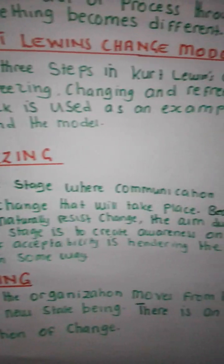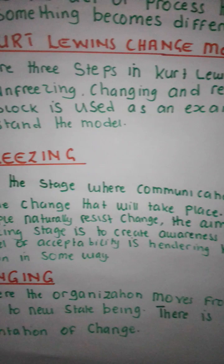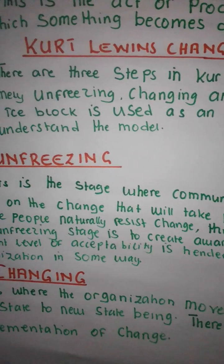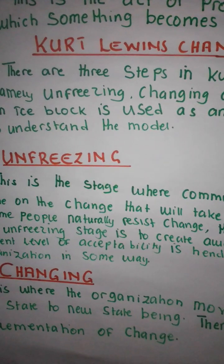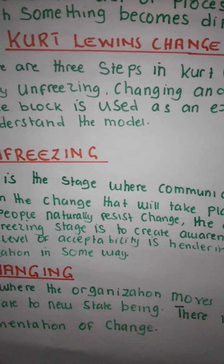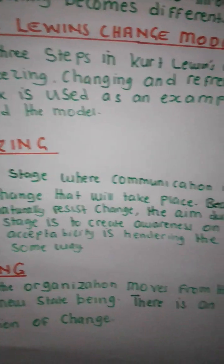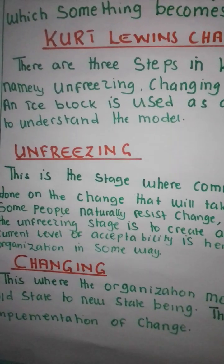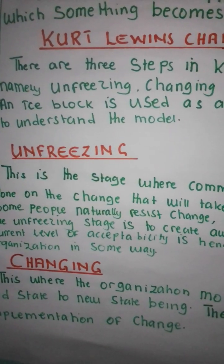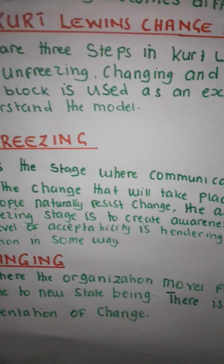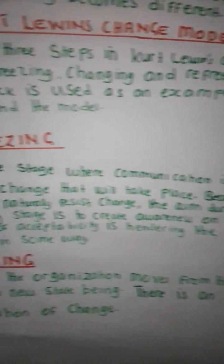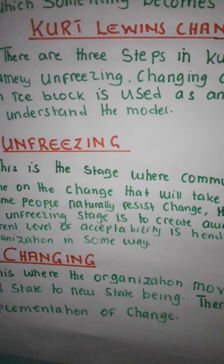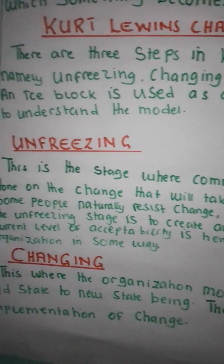Lewin's change model has three steps, namely unfreezing, changing, and refreezing.